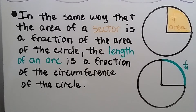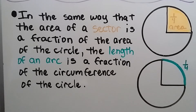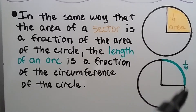In the same way that the area of a sector is a fraction of the area of a circle — this sector is one-fourth of the area of the circle — the length of an arc is a fraction of the circumference of a circle, so this would be one-fourth of the circumference of the circle.